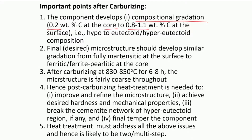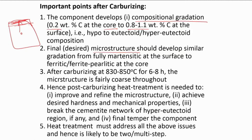From the core to the surface, particularly at the top layer, we have a gradation of composition. We also desire a gradation of microstructure because we want fully martensitic on the top surface and certainly fine pearlitic at the core, so that we maintain very high toughness at the core and very high wear resistance at the surface. Both compositional gradation and microstructural gradation are desired.